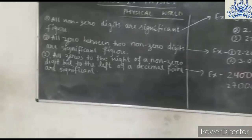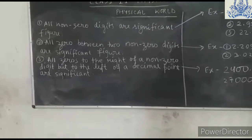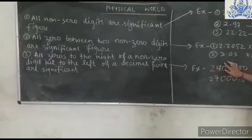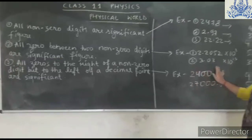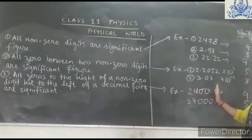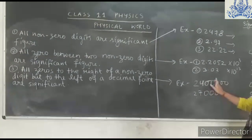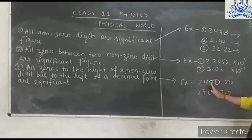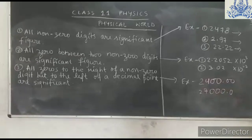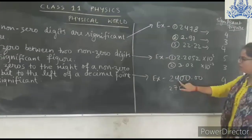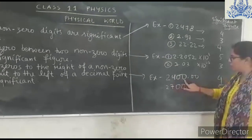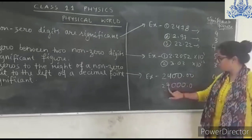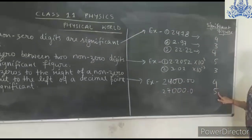Rule 3: All zeros to the right of a non-zero digit but to the left of the decimal point are significant figures. So all digits to the left of the decimal and to the right of the first non-zero digit are significant. In the first example, there are four significant figures — 1, 2, 3, 4. In the second example, there are five significant figures — 1, 2, 3, 4, 5.